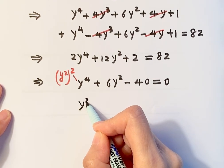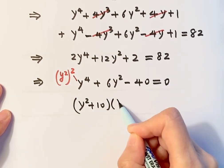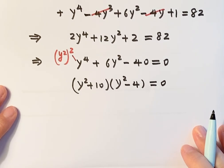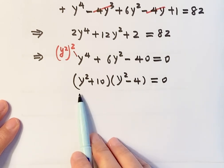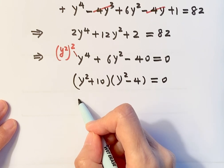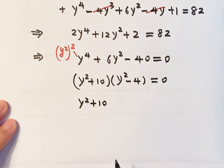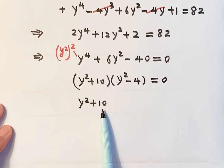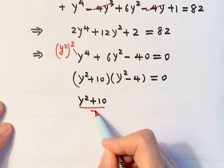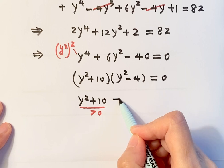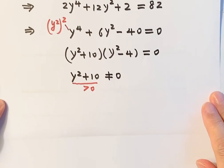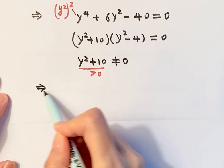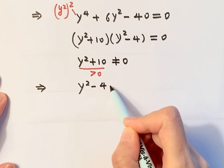Factoring gives (y² + 10)(y² - 4) = 0. Now, the minimum value of y² is 0, so y² + 10 is always greater than 0 and can never equal zero. So the only way the product equals 0 is if y² - 4 = 0.